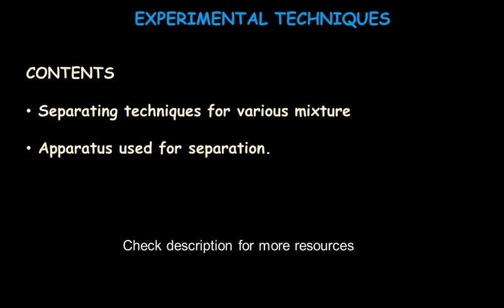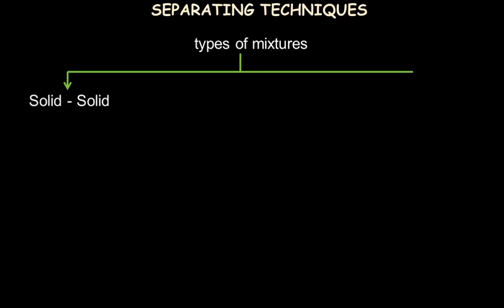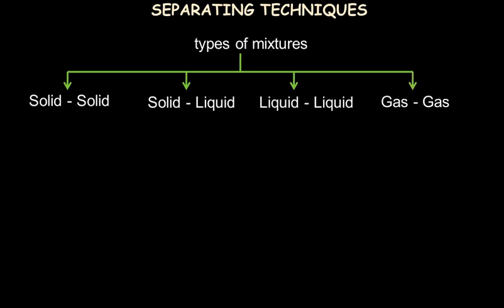In this video we'll be learning about the IGCSE chemistry topic of separating techniques for various mixtures, and we'll also see what are the various apparatus used for the separation. When we talk about separating mixtures, first we need to know what are the different types of mixtures, because based on the type of mixture the method of separation will vary. The different types include solid-solid, solid-liquid, liquid-liquid, and gas-gas mixtures.